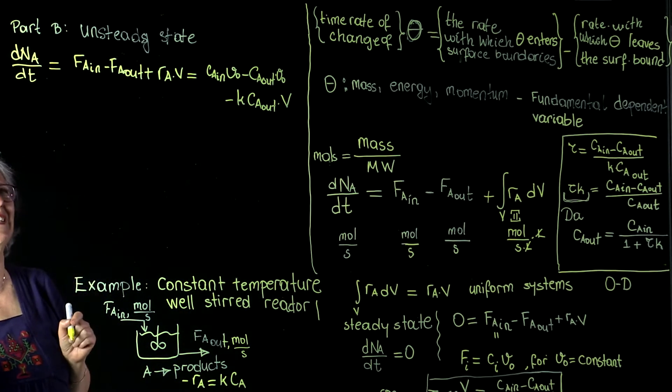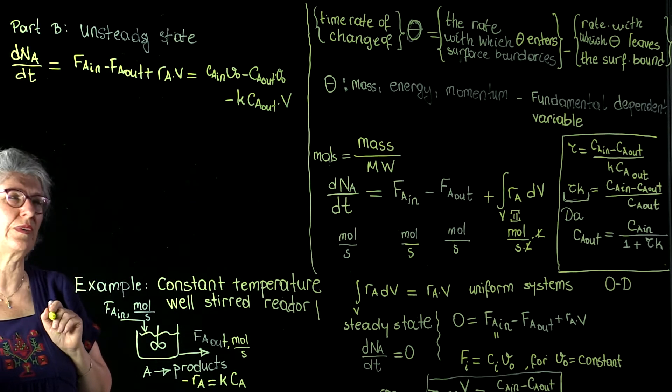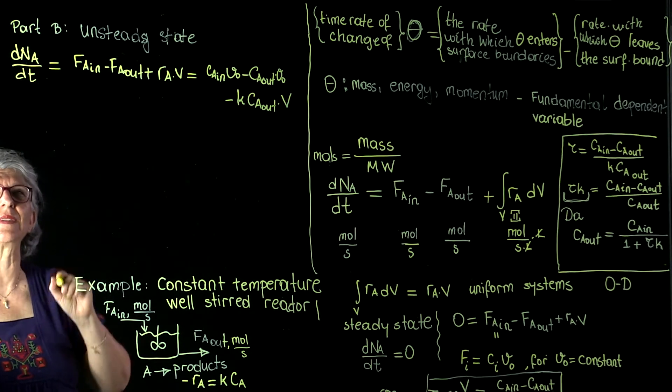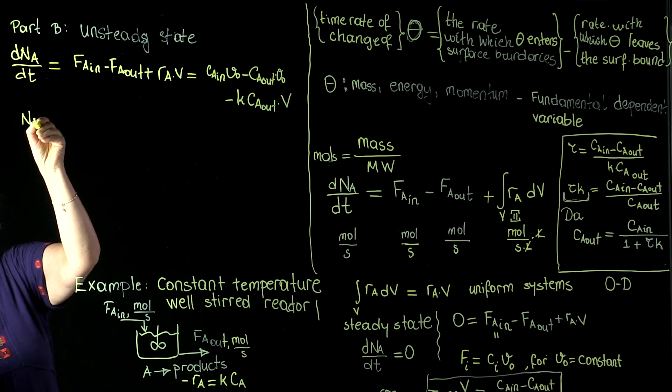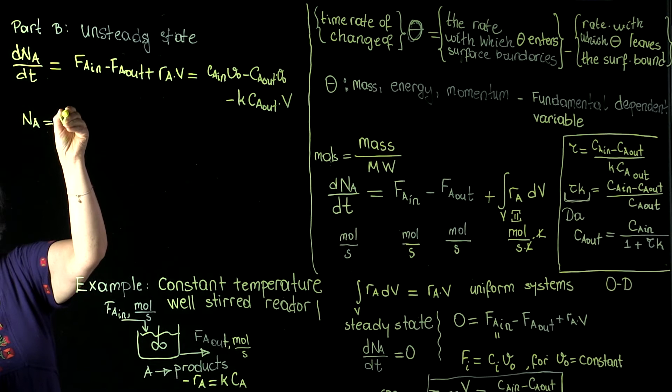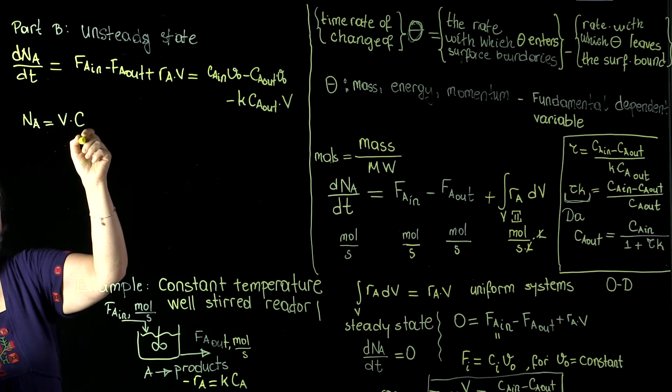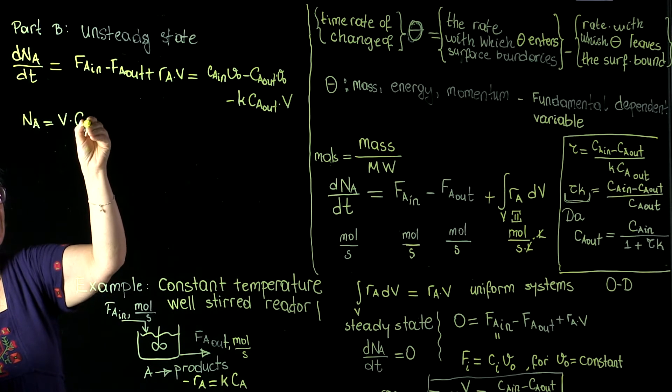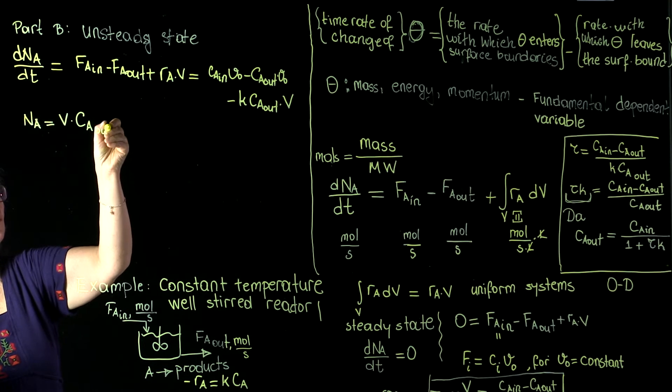Now what is NA? NA is the number of moles of A within the reactor. NA is equal to the reaction volume times CA in the reactor. CA in the reactor so far is represented by CA out.